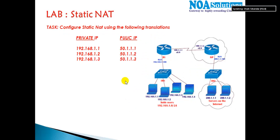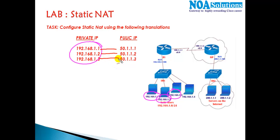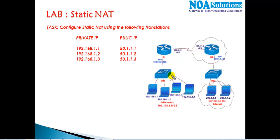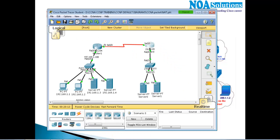Now I'll simulate a scenario with three private users: 192.168.1.1, 1.2, and 1.3, mapped to public IPs 51.1.1.1, 51.1.1.2, and 51.1.1.3 respectively. Similarly, 1.4 maps to 51.1.1.4, and so on. To provide reachability, we must have a default route toward the ISP, and the ISP must have a static route for the public IP address range.